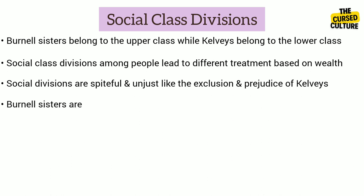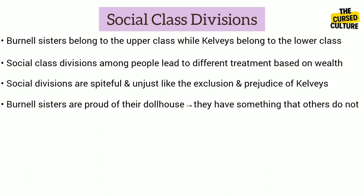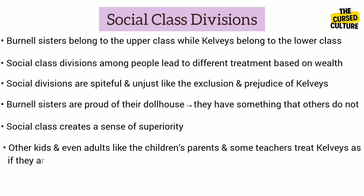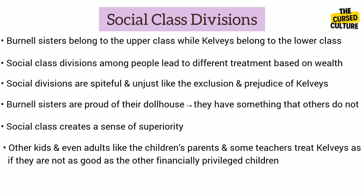The Burnell sisters are proud of their fancy dollhouse and show it off to their classmates. They feel special and important because they have something that the other kids don't — this shows how social class can create a sense of superiority. On the other hand, the Kelvies, like Lil' Kelvy, long to see the dollhouse but are excluded because they are from a lower social class. The other kids and even adults treat them as if they are not as good as the other financially privileged children. This demonstrates how social class divisions can lead to unfair treatment and exclusion.